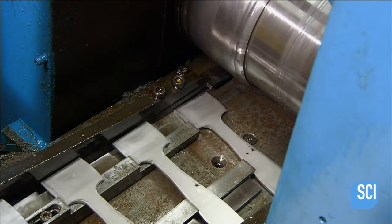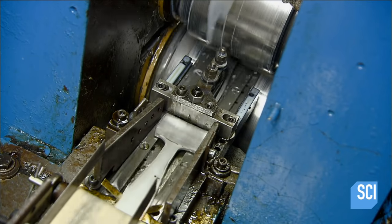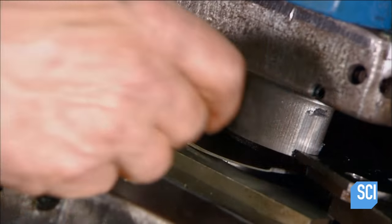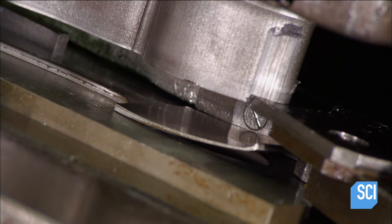On the spoon line, a press cuts stainless steel into paintbrush-shaped pieces. Then heavy rollers stretch those pieces out, thinning the end that will become the spoon's bowl. A trim press cuts the spoon's profile.